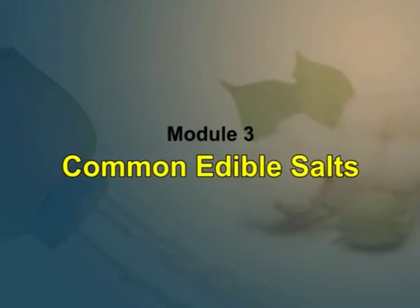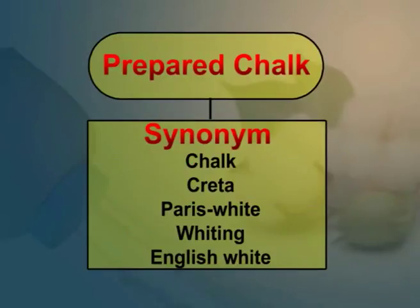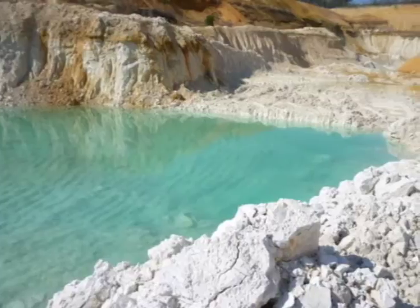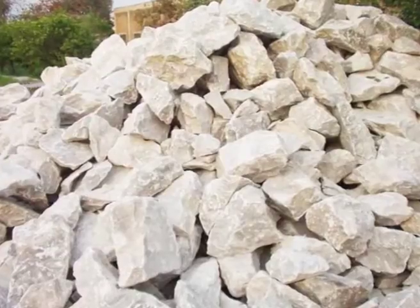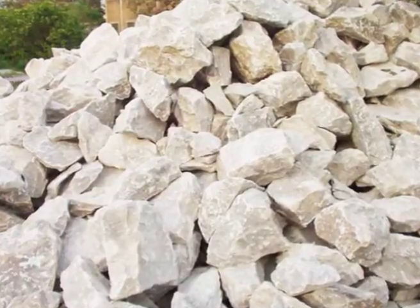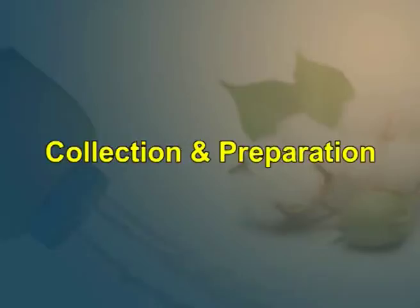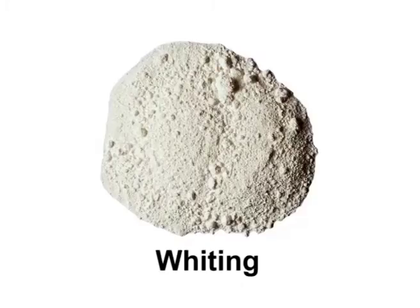Module 3. In this session, we will learn about common edible salts. Prepared chalk — synonyms: chalk, krita, Paris white, whiting, English white. Source: chalk is a native form of calcium carbonate freed from most impurities by elutriation. It contains not less than 97% weight by weight of calcium carbonate when dried at 100°C. Collection and preparation: chalk is mined in open quarry, pulverized and then purified by elutriation. The water is removed and the insoluble chalk is settled forming flat cakes known as whiting, which is purified further for pharmaceutical use.